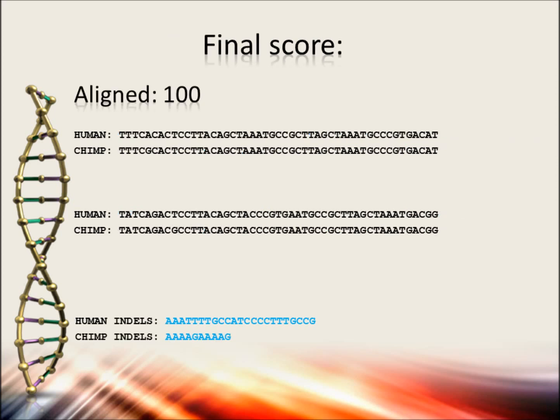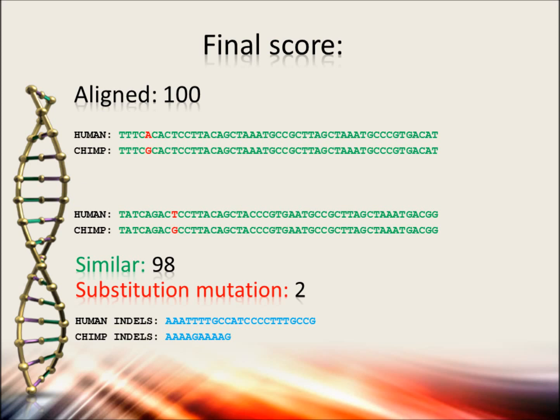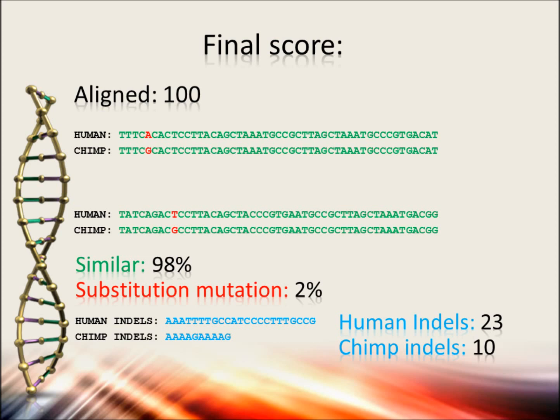In this example we got 100 base pairs aligned. The result is that 98 of these base pairs are similar, so only two of them differ — and since we have 100 base pairs aligned, we can just put a percentage sign behind it. But to get to that answer, we have first removed 23 indels for the human DNA and 10 indels for the chimp DNA. Remember, indels are always different. So in reality we have an average of about 16% extra difference for this example.